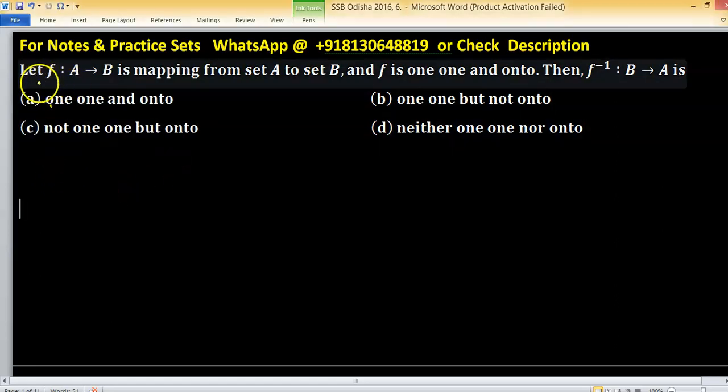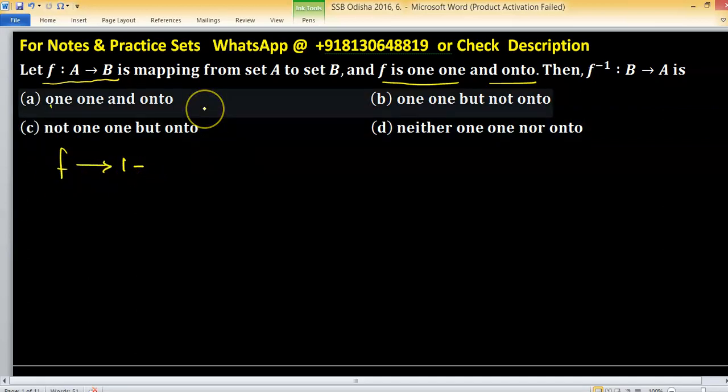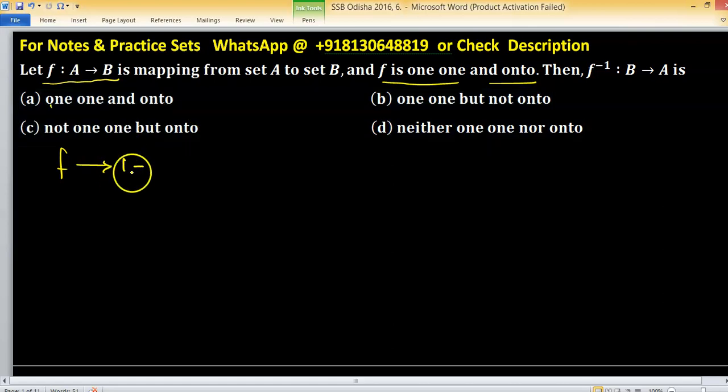In this given problem, f is a function defined from set A to set B and f is one-one and onto. f is one-one and onto means, in other words, the function is bijective. One-one and onto means the function is bijective.